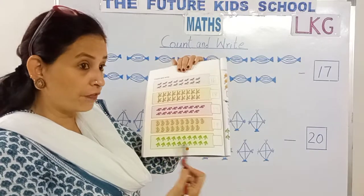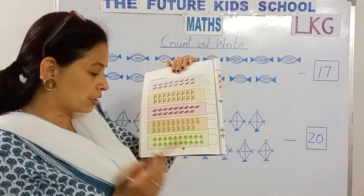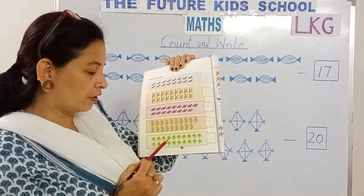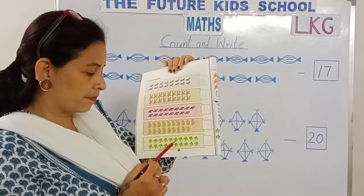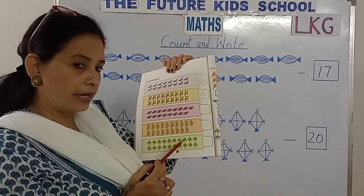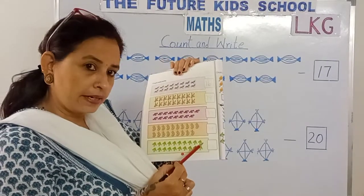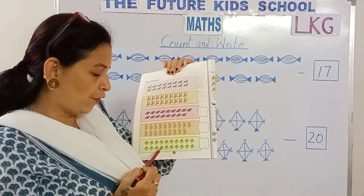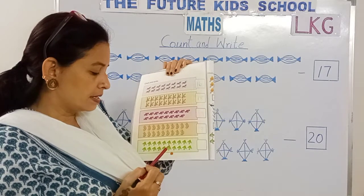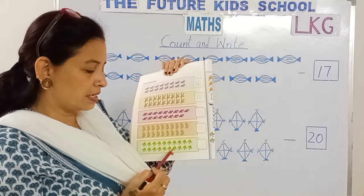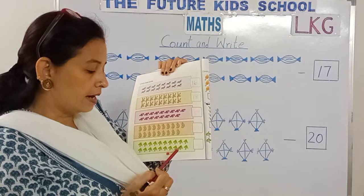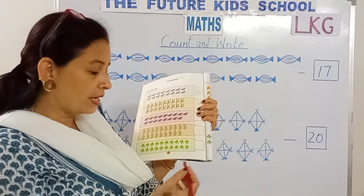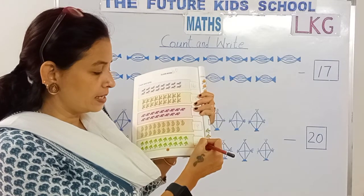Now children, let's count the number of kites. Let's do it together. 1, 2, 3, 4, 5, 6, 7, 8, 9, 10, 11, 12, 13, 14, 15, 16, 17, 18, 19, 20. We've got 20 kites over here. 2 and 0, 20. Write the number — 2 and 0, 20.